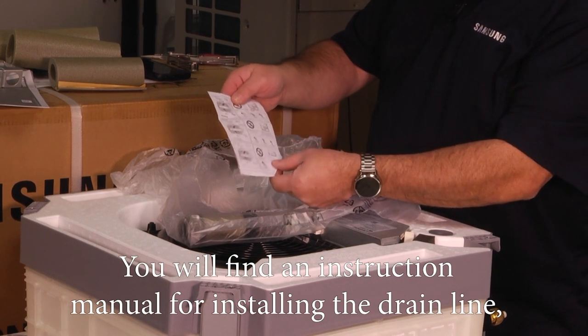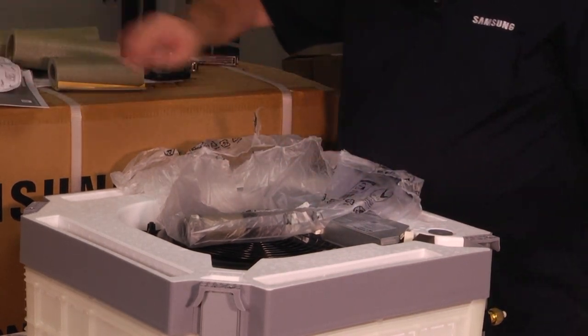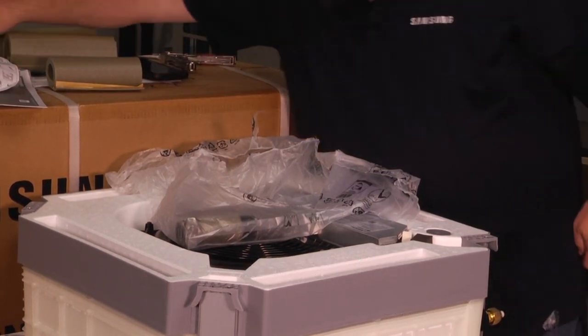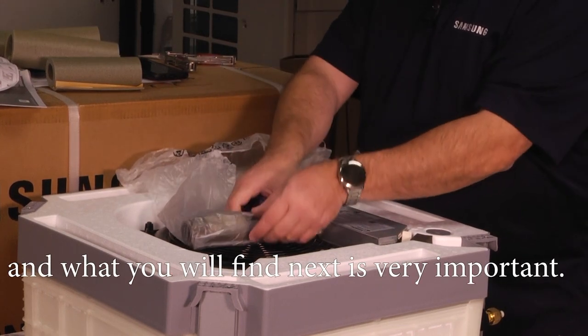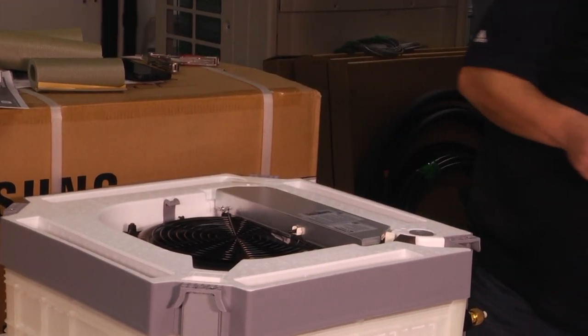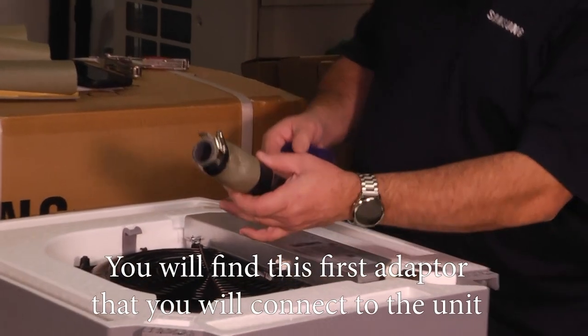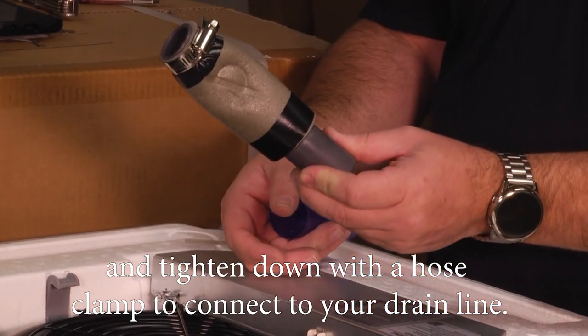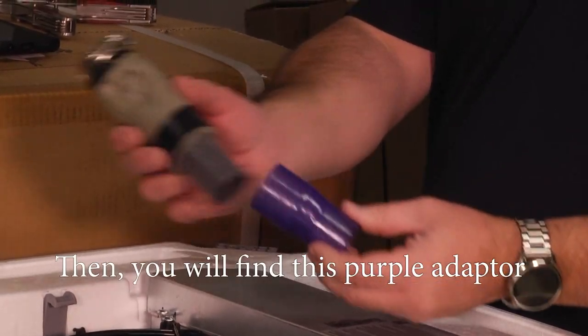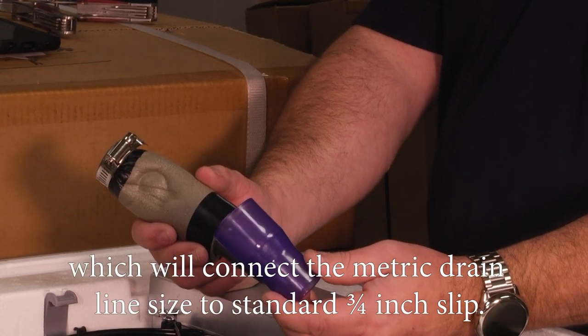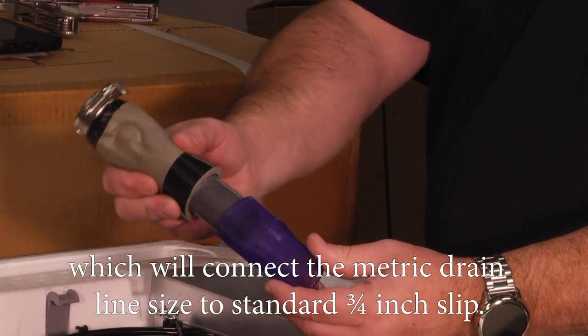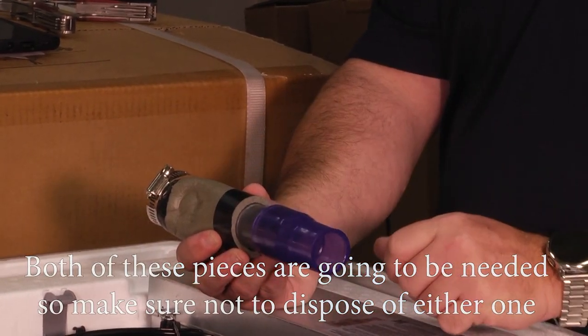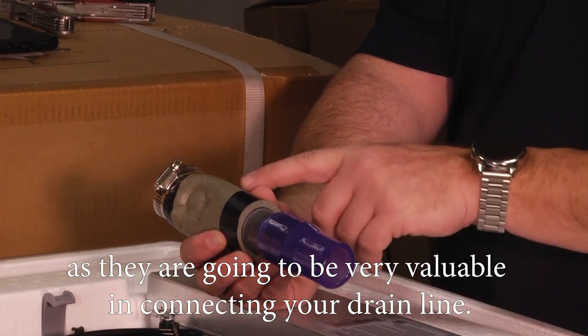You'll find an instruction manual for installing the drain line, some various zip ties to hold everything in place, and what you'll find next is very important. You'll find this first adapter that you will connect to the unit and tighten down with a hose clamp to connect to your drain line. Then you'll find this purple adapter which will convert the metric drain line size to standard three-quarter inch slip. Both of these pieces are going to be needed, so make sure not to dispose of either one.